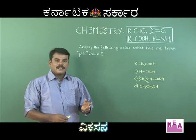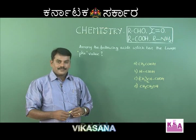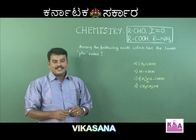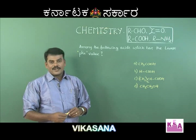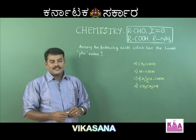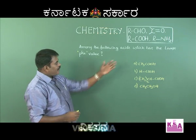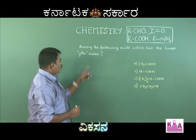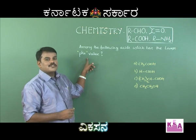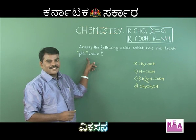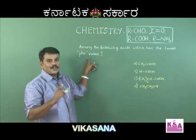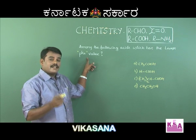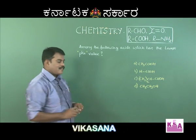For formic acid (methanovic acid), there is no electron-releasing group — no +I effect — so formic acid must be the strongest. Remember: lower the pKa value, stronger is the acid; higher the Ka value, stronger is the acid. pKa = −log(Ka).